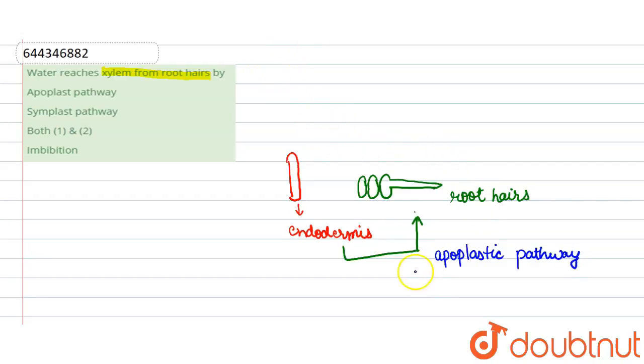In the apoplastic pathway, the movement is through dead cells or dead parts of plants. Whereas after the endodermis...